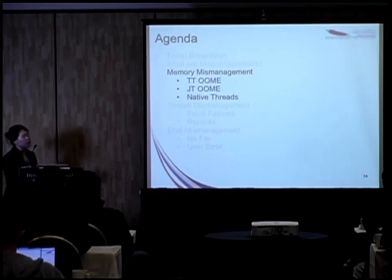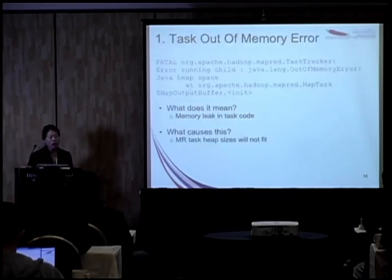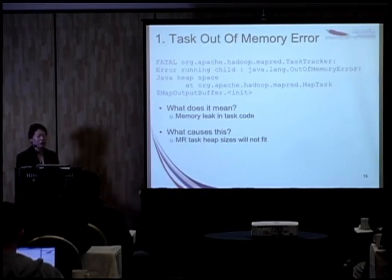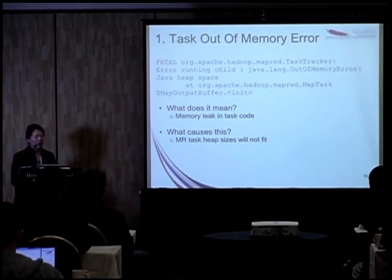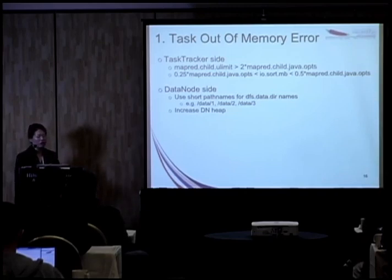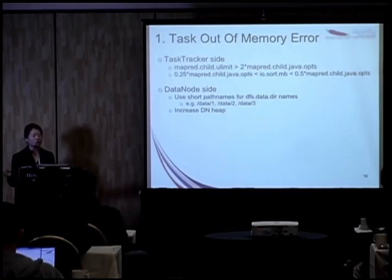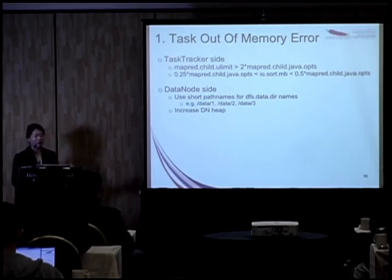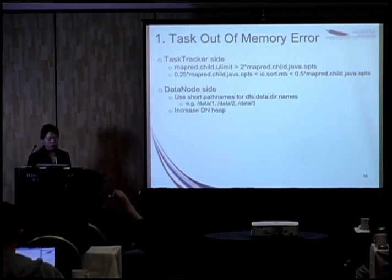That's a good segue into our first mismanagement topic: memory. If you're seeing an out-of-memory error, it's most likely a memory leak or incorrectly configured memory. You want to set your map buffer size to between a quarter and a half of your child heap size — this has consistently worked well across diverse clusters, though it should be overridden per job as needed.